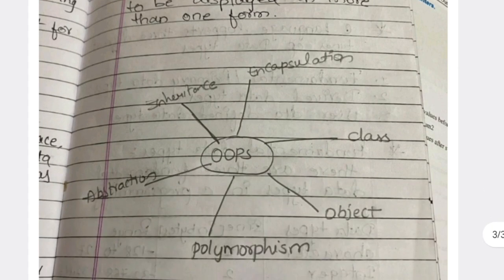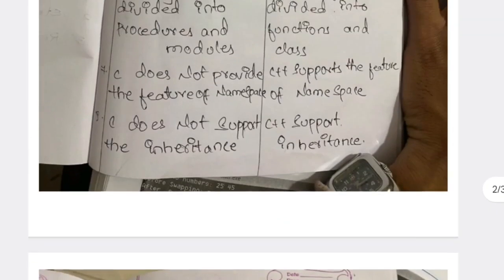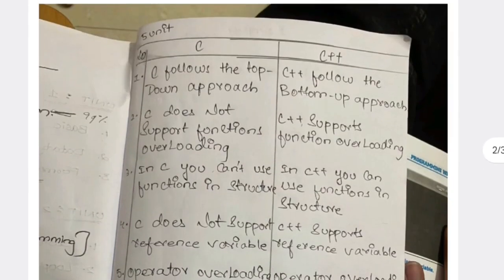In unit five you are not having any programs at all — programs are only in units one to four. So you need to remember to draw flowcharts and elaborate the answers. The next question is differences between C and C++.